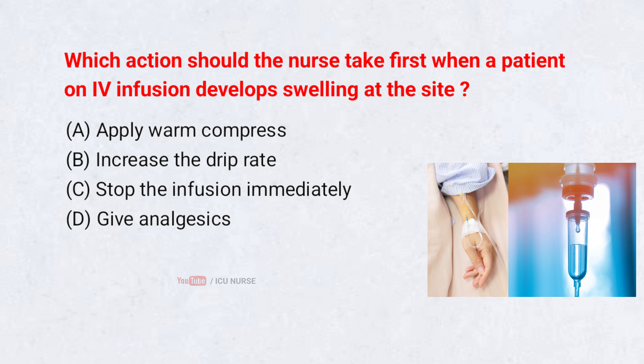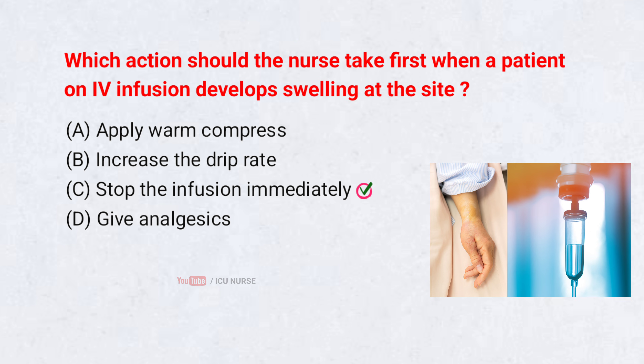Which action should the nurse take first when a patient on IV infusion develops swelling at the site? A. Apply warm compress. B. Increase the drip rate. C. Stop the infusion immediately. D. Give analgesics. Correct answer: C. Stop the infusion immediately. Swelling suggests infiltration or extravasation, and stopping the infusion prevents further tissue damage.